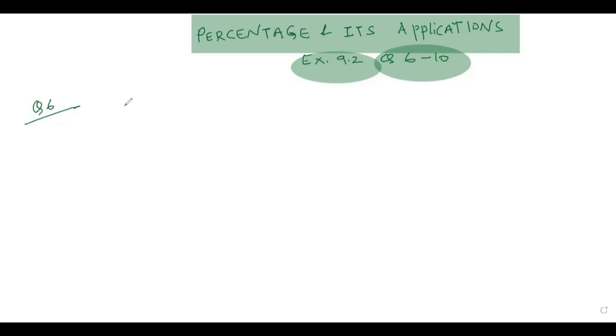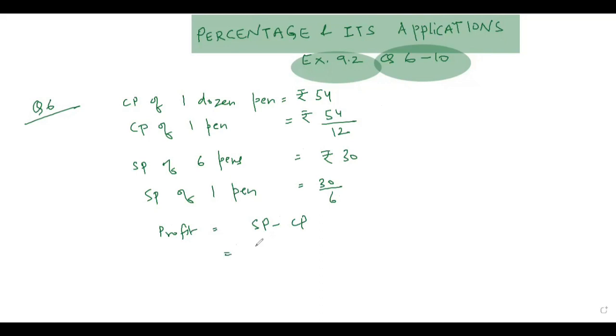Cost price of 1 dozen pen equal to rupees 54 and cost price of one pen equal to rupees 54 by 12. Now selling price of six pens would be rupees 30 and selling price of one pen would be 30 by 6. Now profit is always equal to selling price minus cost price, so selling price is 30 by 6 minus cost price 54 by 12.